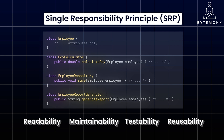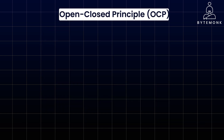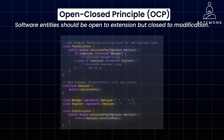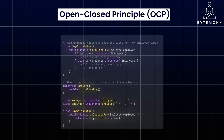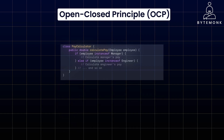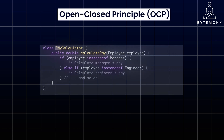The Single Responsibility Principle promotes modularity and separation of concerns, making your code more maintainable, testable, and adaptable to changes. In the Open-Closed Principle, the idea is that software entities such as classes, modules, and functions should be open for extension but closed for modification. In this PayCalculator example, the class is not open for extension — every time you introduce a new type of employee, such as a salesperson or intern, you need to modify the CalculatePay method. This violates OCP and introduces the risk of breaking existing functionality, making the code less maintainable.